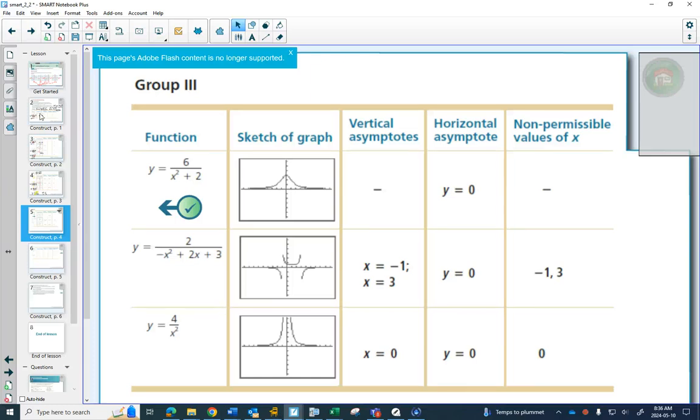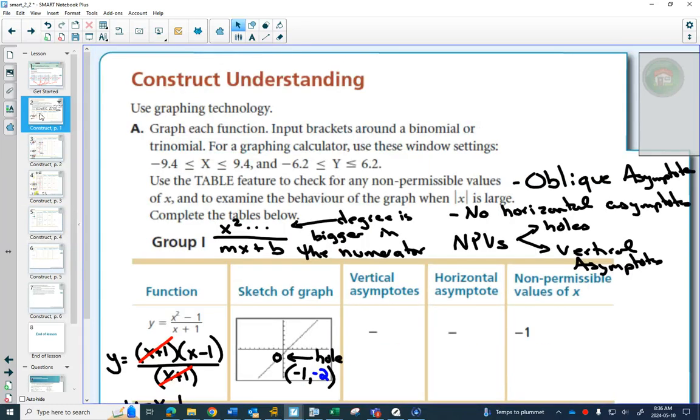All right, a little recap so far. Group 1 that we looked at was a rational function where the degree was always bigger in the numerator. And one thing we noticed in all of these is there was no horizontal asymptotes. Sometimes there was diagonal asymptotes, sometimes there were holes.